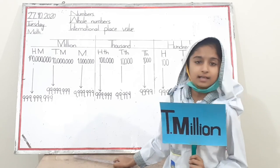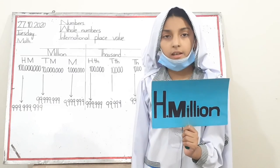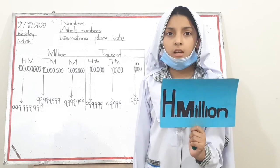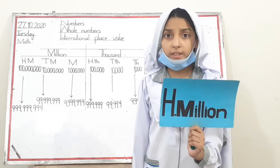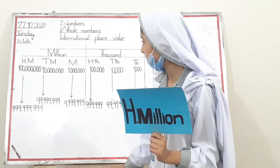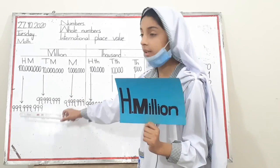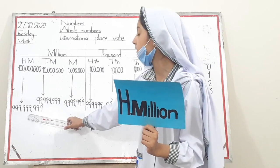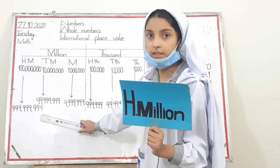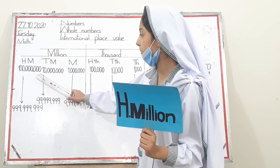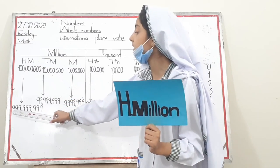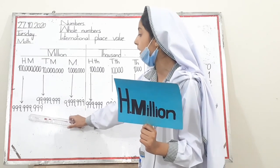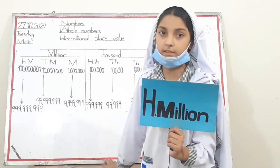Hi friends, I am one hundred million, a member of the million family. I show nine digits, for example one hundred million to nine hundred ninety-nine million nine hundred ninety-nine thousand nine hundred and ninety-nine. My smallest number is one hundred million and my biggest number is nine hundred ninety-nine million nine hundred ninety-nine thousand nine hundred and ninety-nine. Thanks.